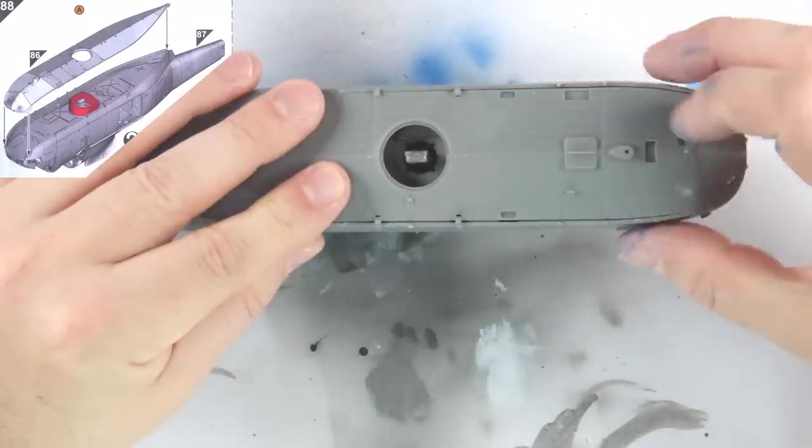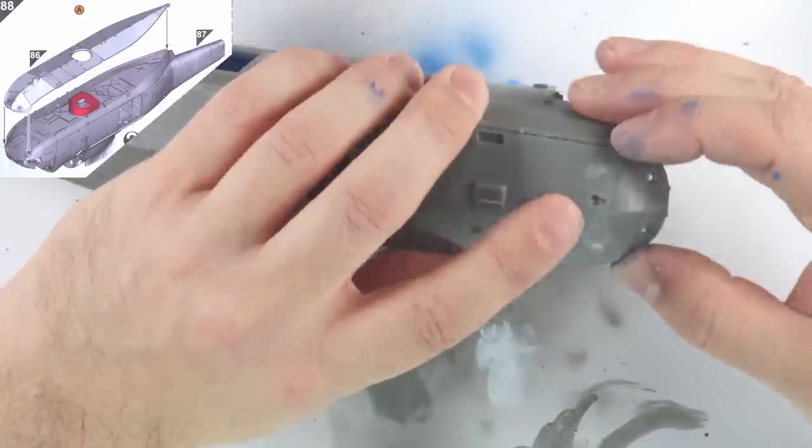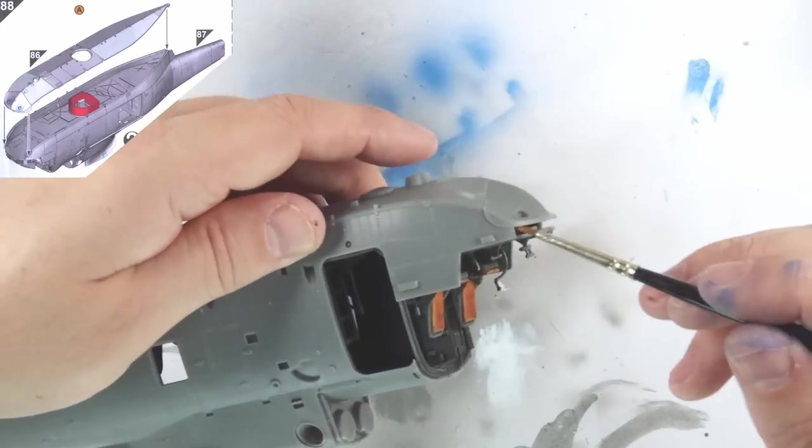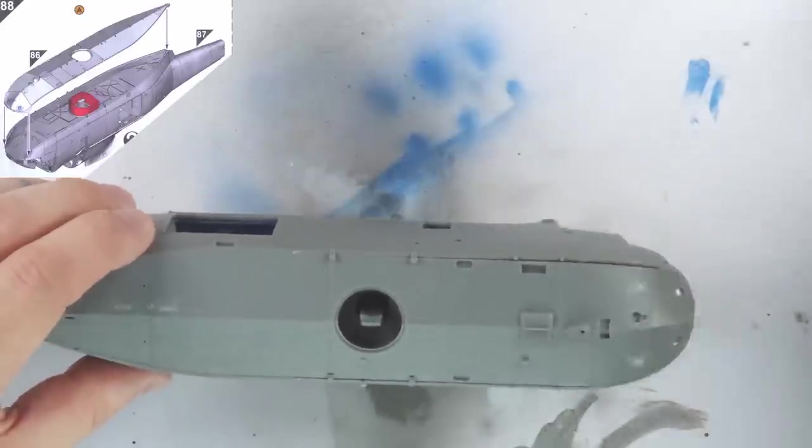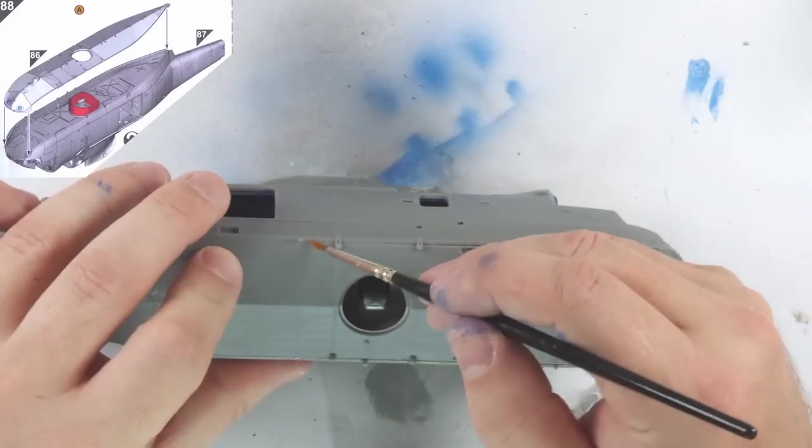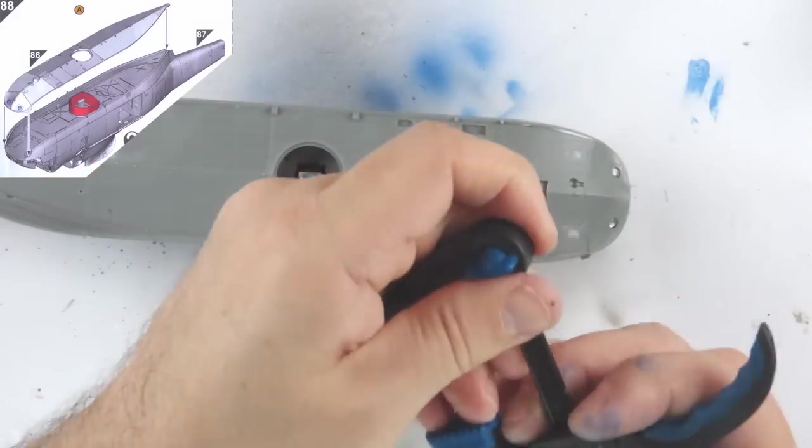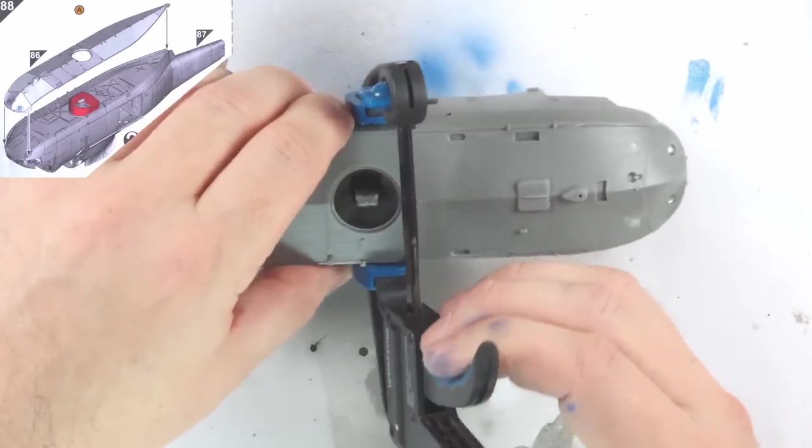Step 86 brings that nose assembly onto the lower hull. That lower hull complete, we bring that onto the rest of the fuselage and again can secure with liquid cement. I did clamp this assembly, one of the only times I felt I needed to do this in the build.